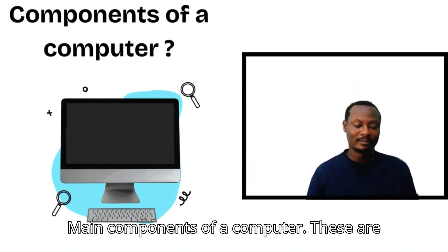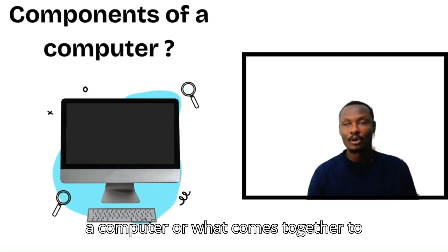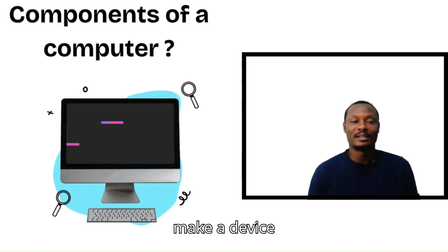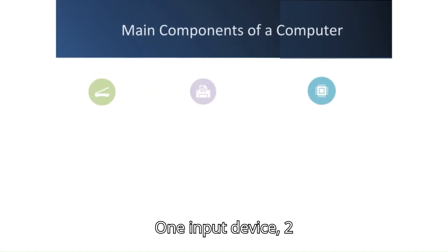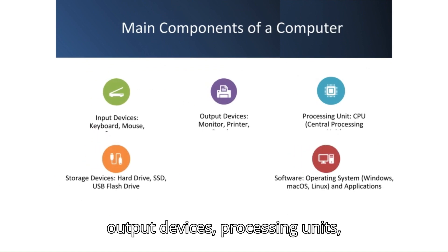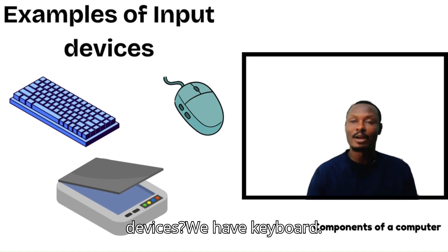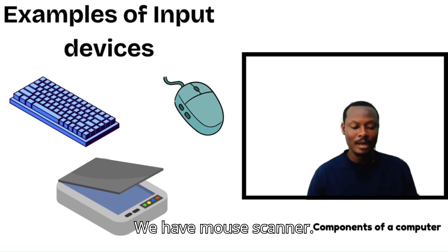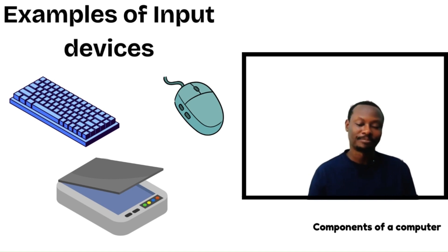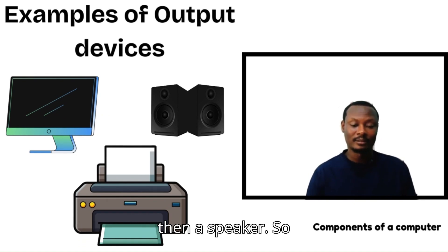The main components of a computer are the features that come together to make a device useful. The computer system consists of: input devices, output devices, processing units, storage, and software. Examples of input devices include the keyboard, keypad on phones, mouse, and scanner. Output device examples include the monitor, printer, and speaker.